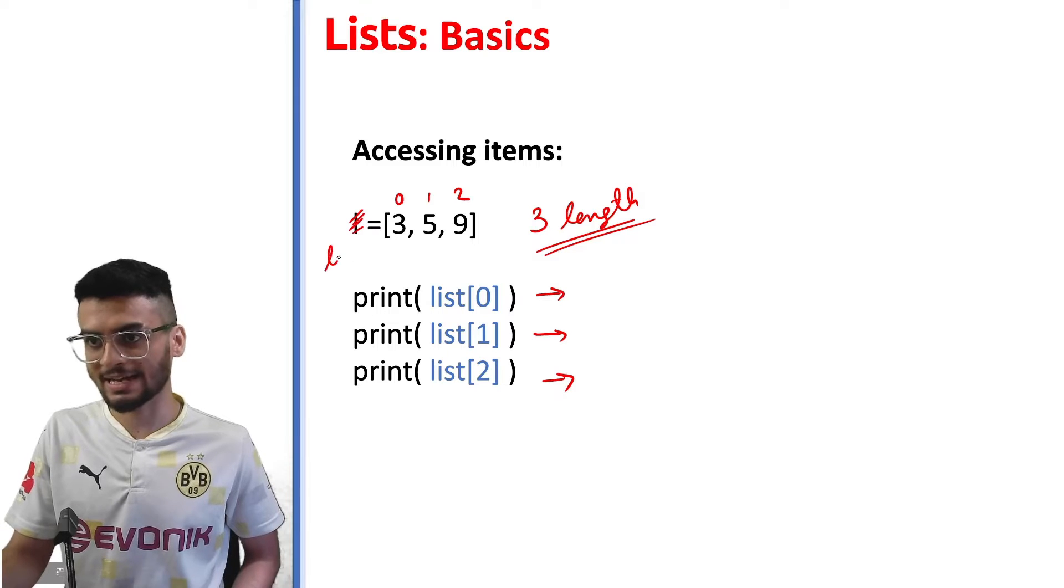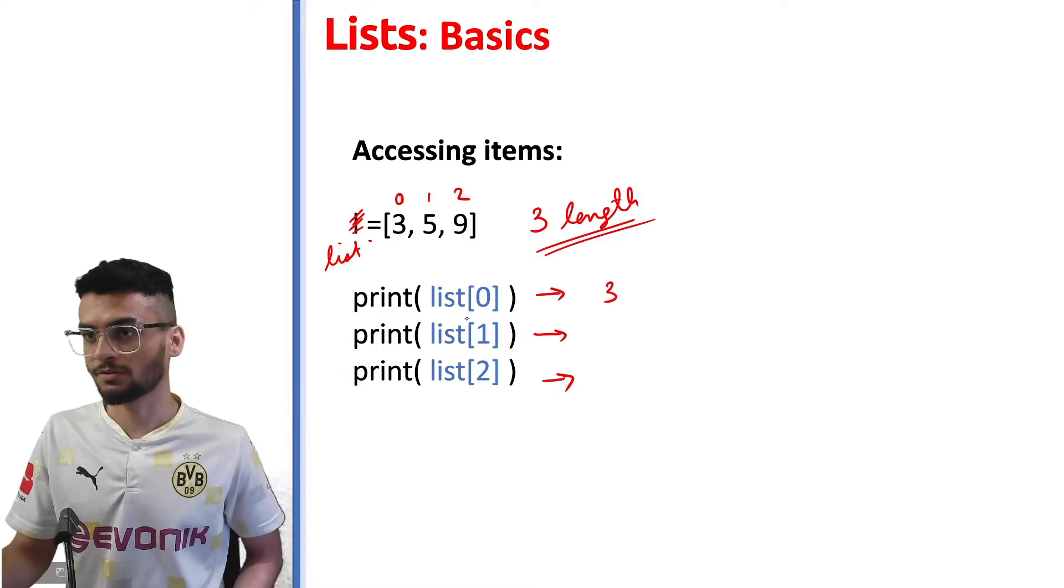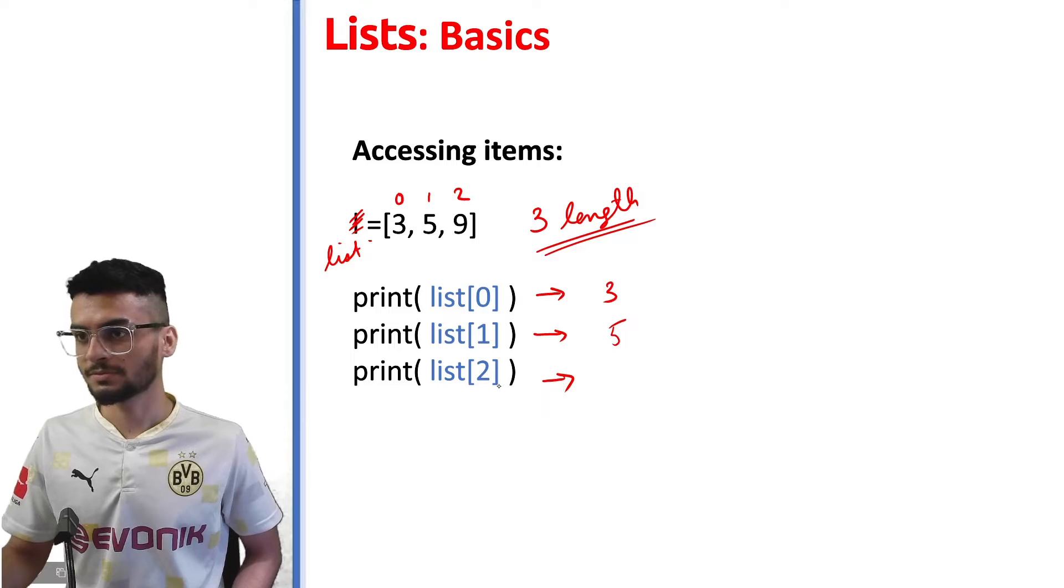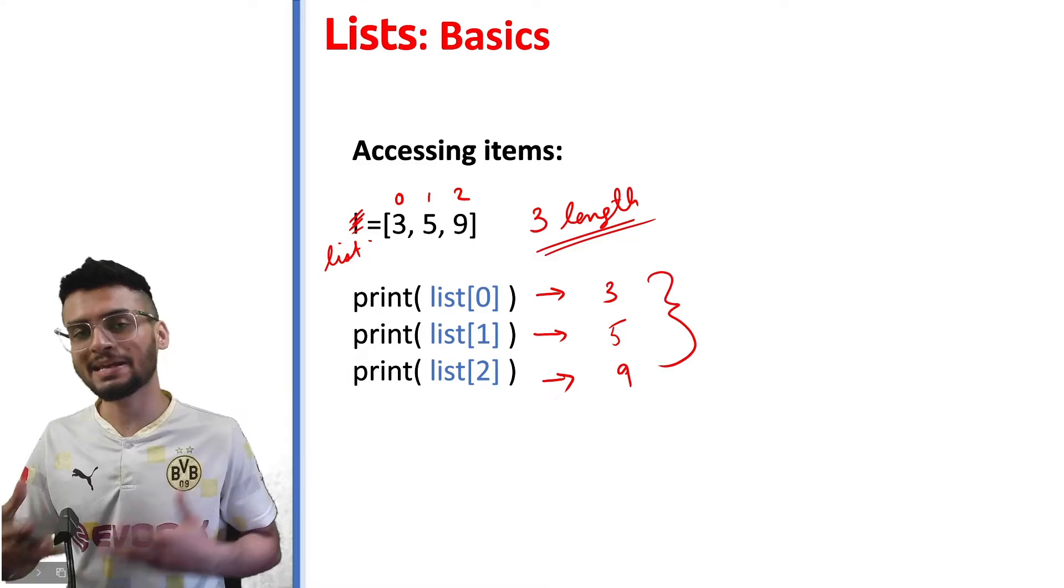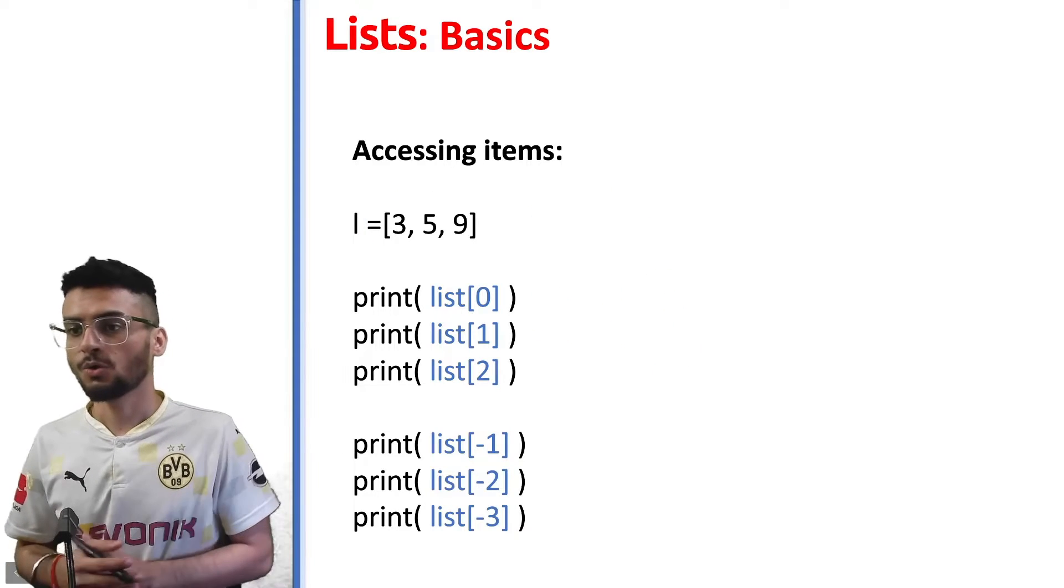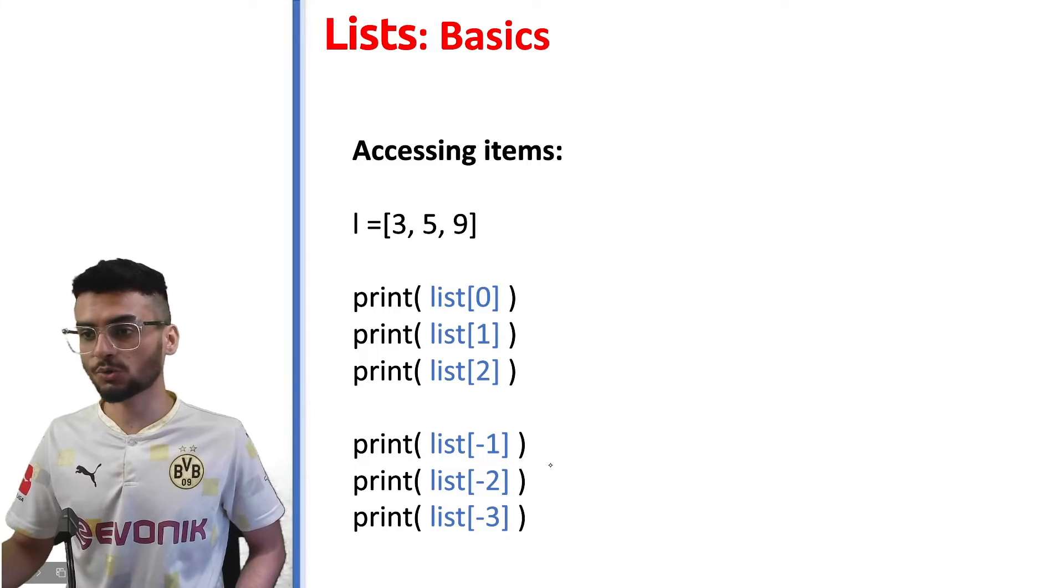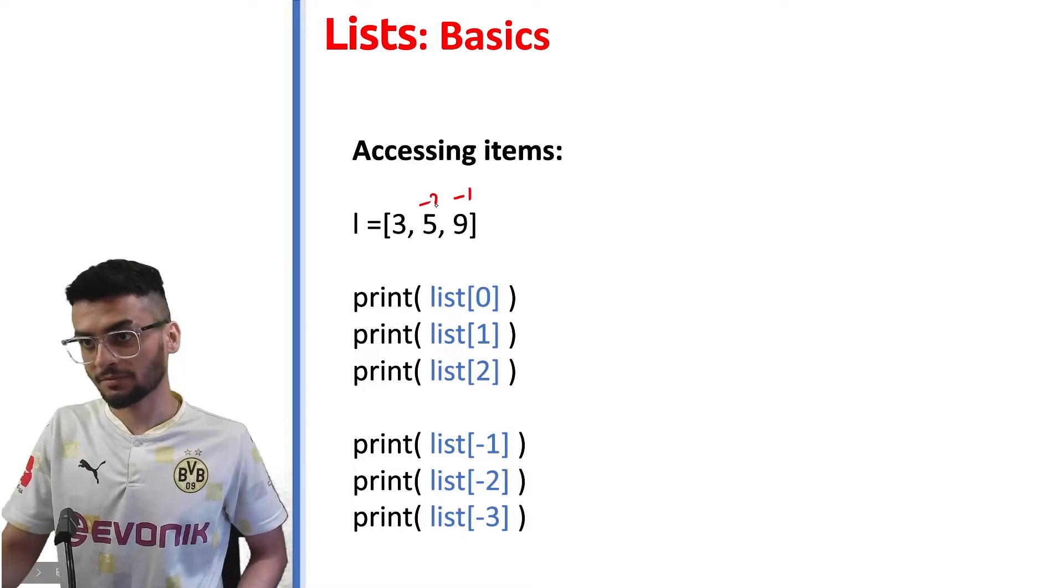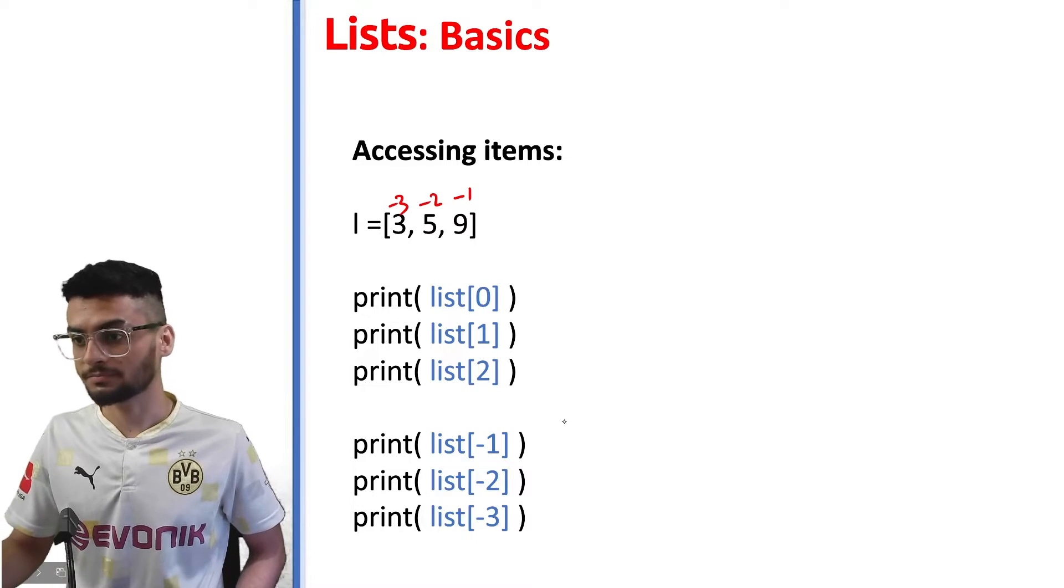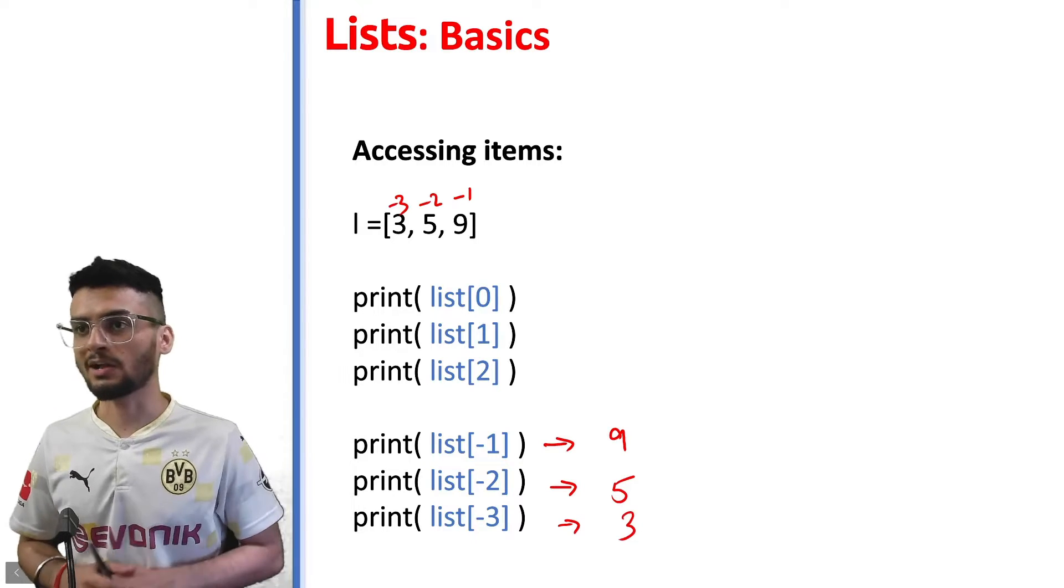So list at zeroth element, index at zero, is three. First element is five, second element is nine by using square brackets. You can access any element within a list. It's not necessary that you have to use forward indexing. You can also count from the back. So when you count from the back, all the indexes will be negative. If I write the index, it will start from minus one. So this becomes nine, this becomes five, and this becomes three. I hope things are clear till now.